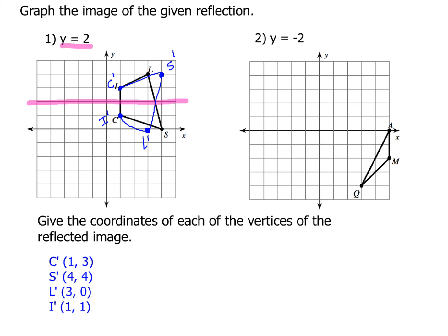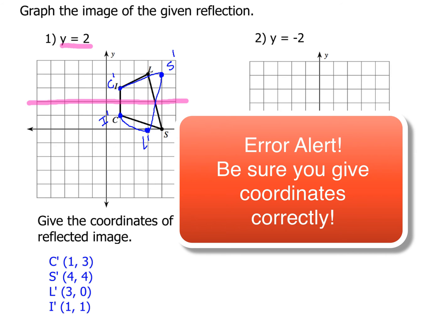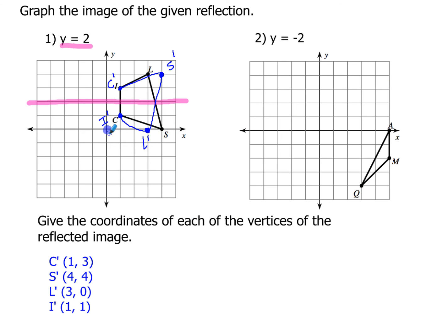Now the thing you have to be really careful with this is that when you get the coordinates for it, that you make sure to count from the origin from that spot right there. Because a lot of people will incorrectly count from where the line of reflection is. So just be real careful with that. That's a real common mistake.